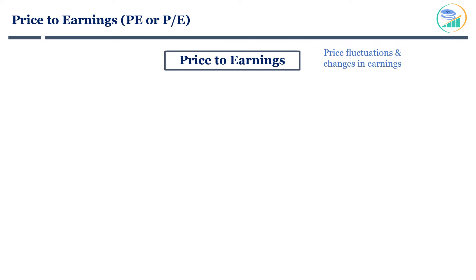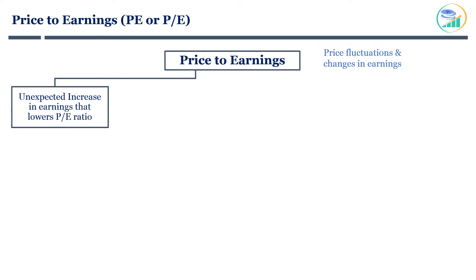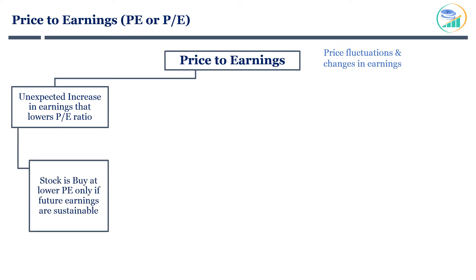Let's start with unexpected increase in earnings. A company can have an unexpected increase in earnings due to various reasons, like an exceptional quarter or a one-time boost in earnings due to non-operating income and so on. This will make the P/E of the stock look very low. The question you should ask is: is this earning sustainable in future, or will it revert to the mean? A stock is a buy at lower P/E only if future earnings are sustainable for the next several years.